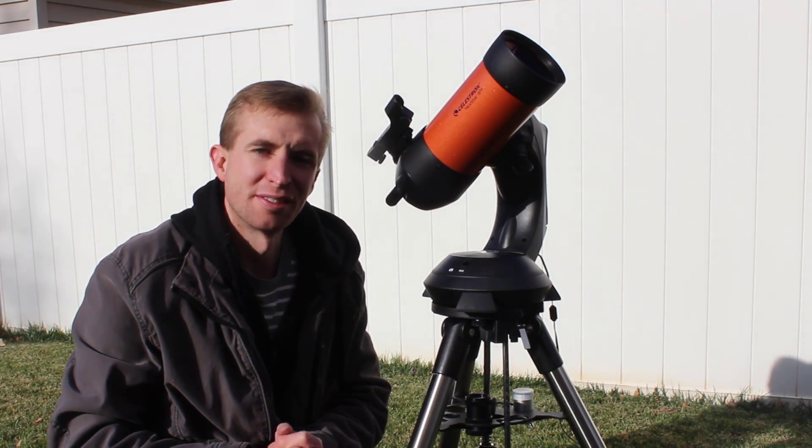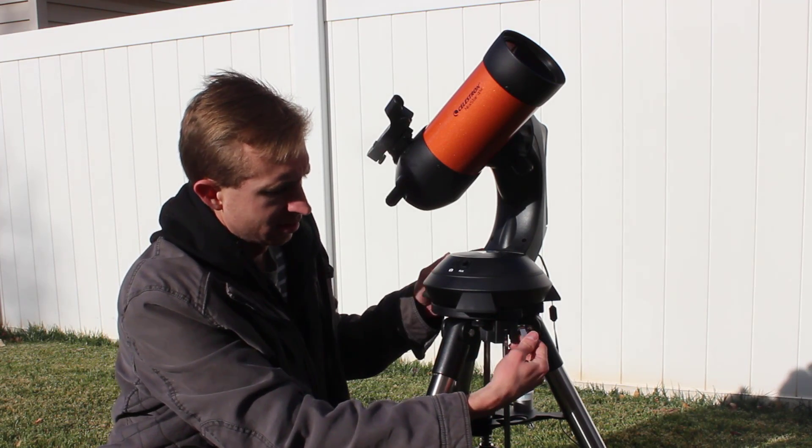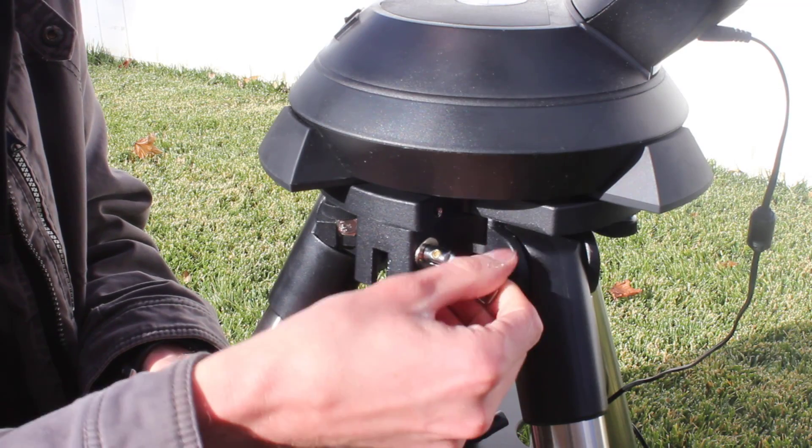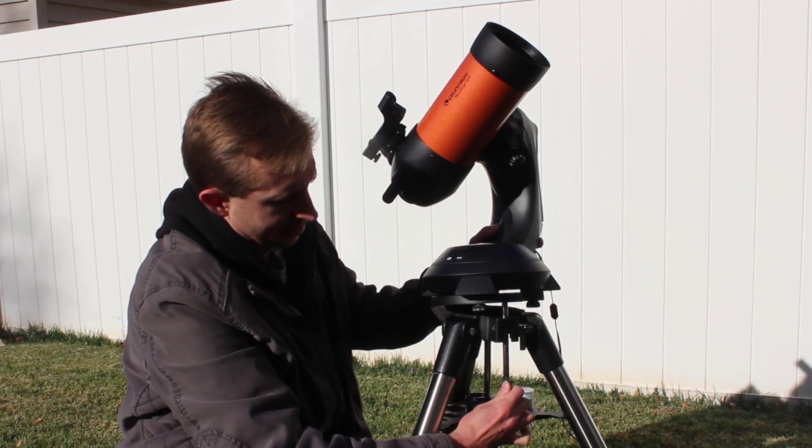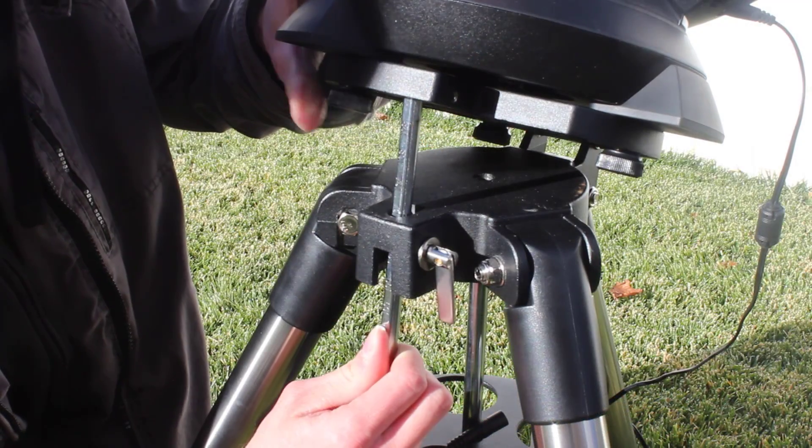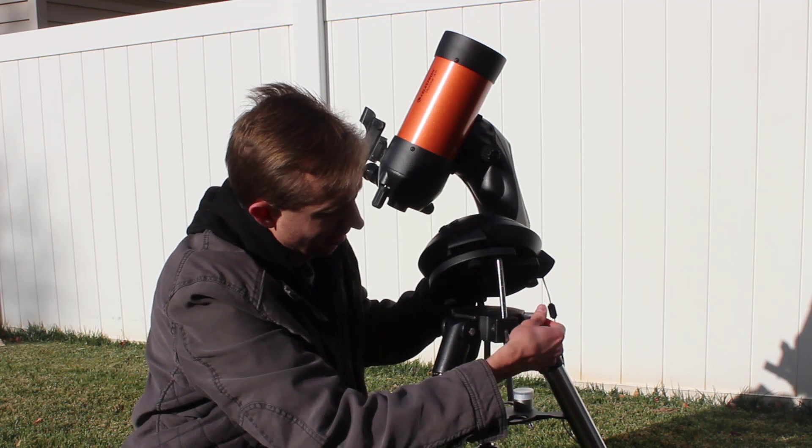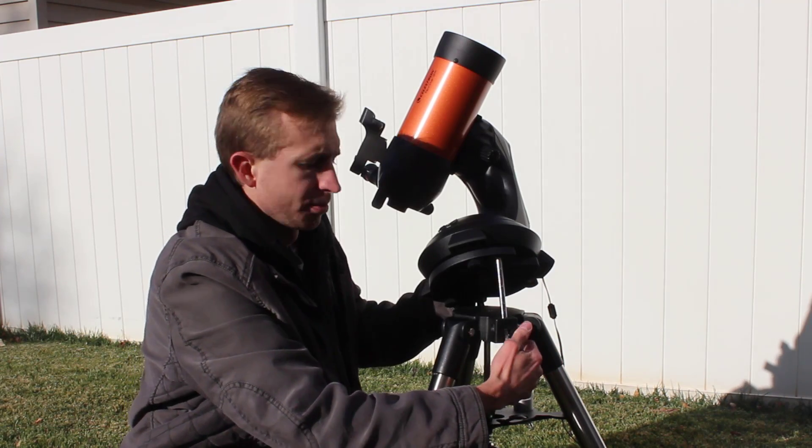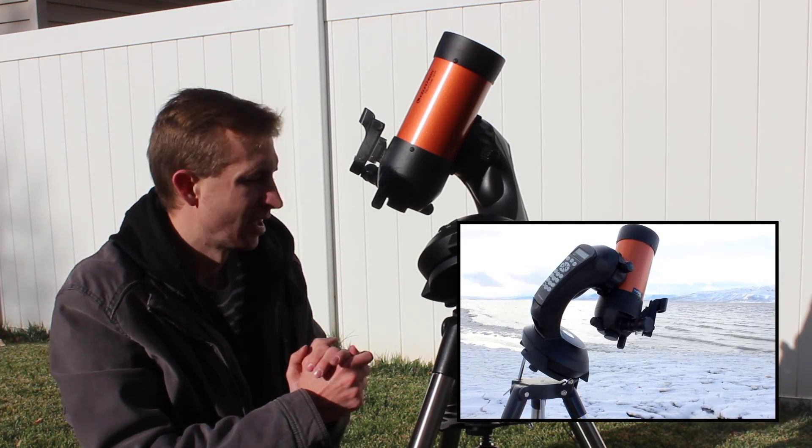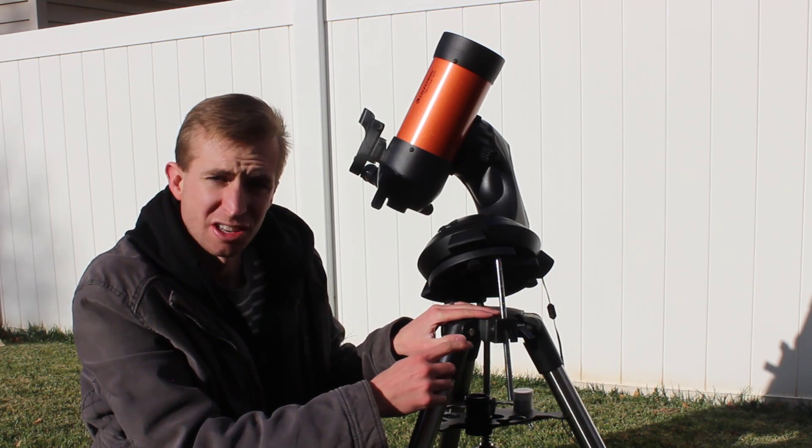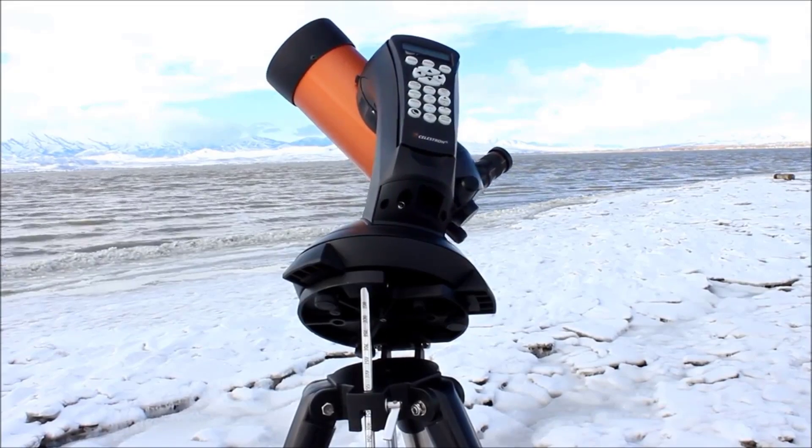One interesting thing about the 4SE and 5SE tripod is it does include a little polar wedge. So if you want to try long exposure astrophotography, you can use this. To use it, you simply unthread it. And once it's unthreaded, you push up on this bar here until you find your latitude. And now your telescope can be used in equatorial mode.